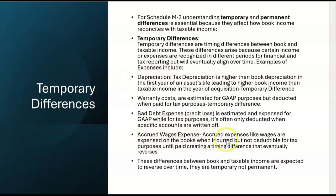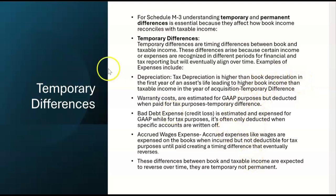Same with accrued wages — accrued expenses like wages are expensed on the books when incurred, but not deductible for tax purposes until the wages are paid, creating a timing difference that eventually reverses. Since these differences between book and taxable income are expected to reverse over time, they are all temporary, not permanent differences. They all have to do with when you can expense it on the financial statements versus when you can deduct it on the tax return.